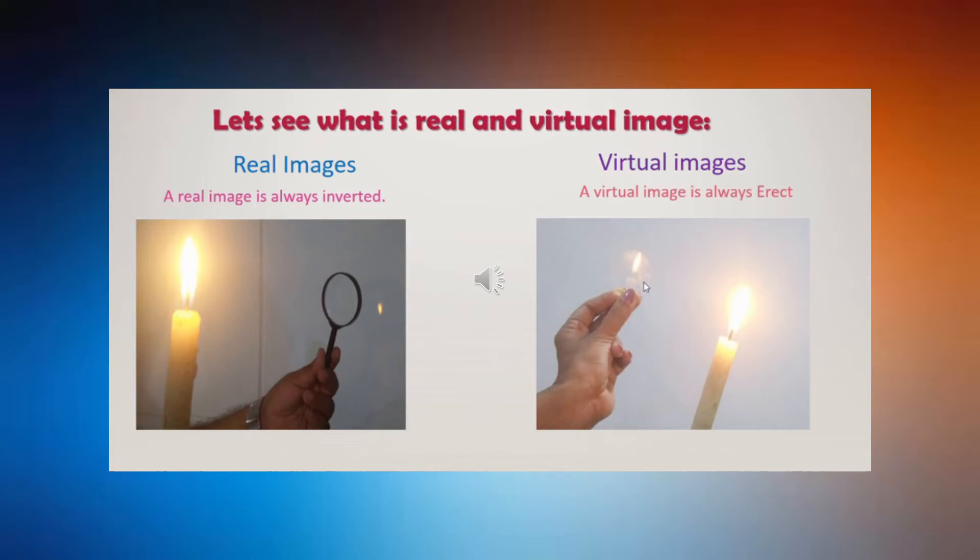There are two types of image. One is called a real image, and another one is a virtual image. The real image is always inverted, whereas the virtual image is erect, or we can call it upright.